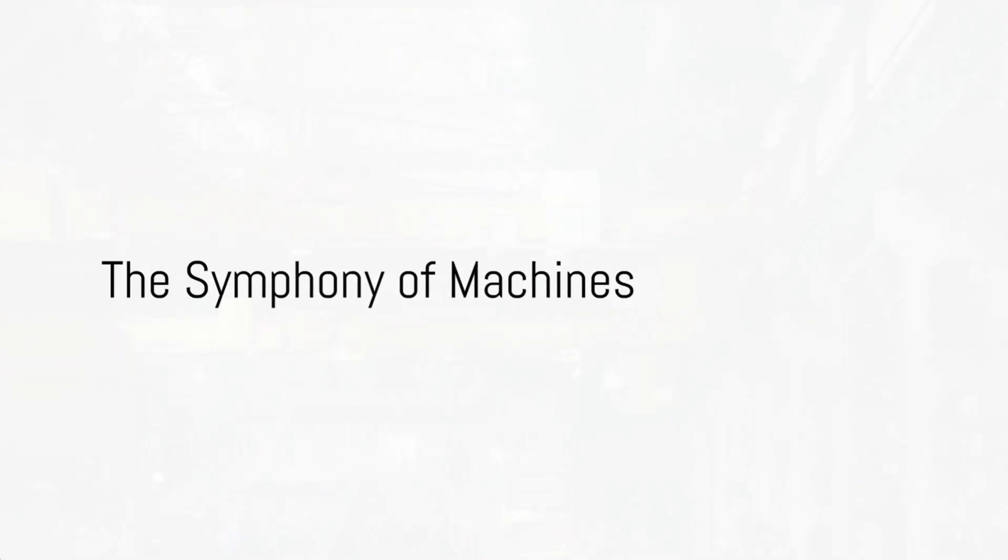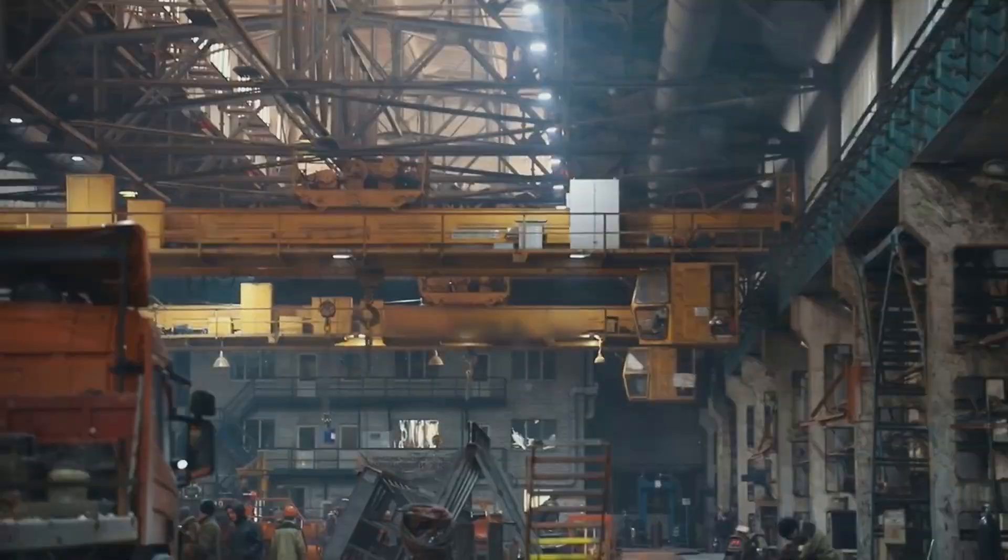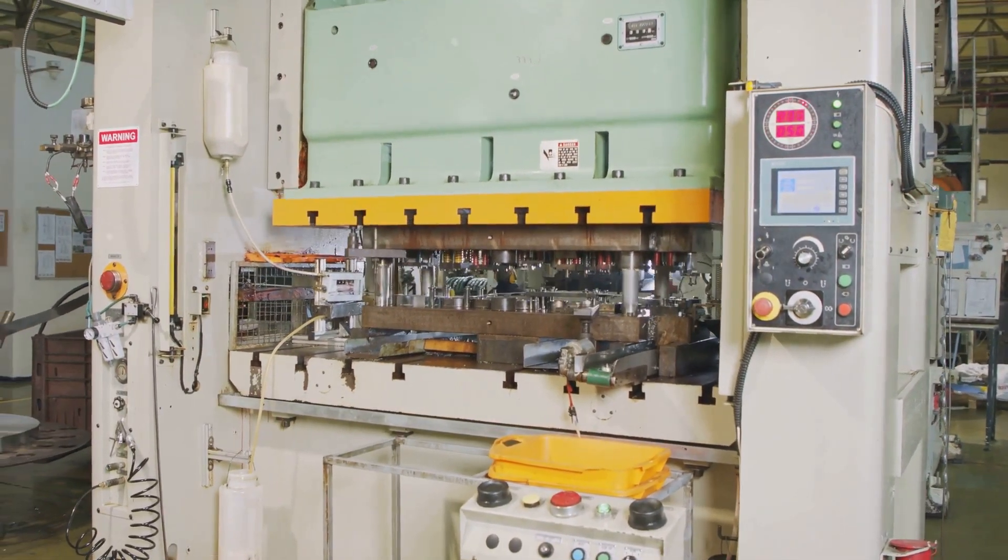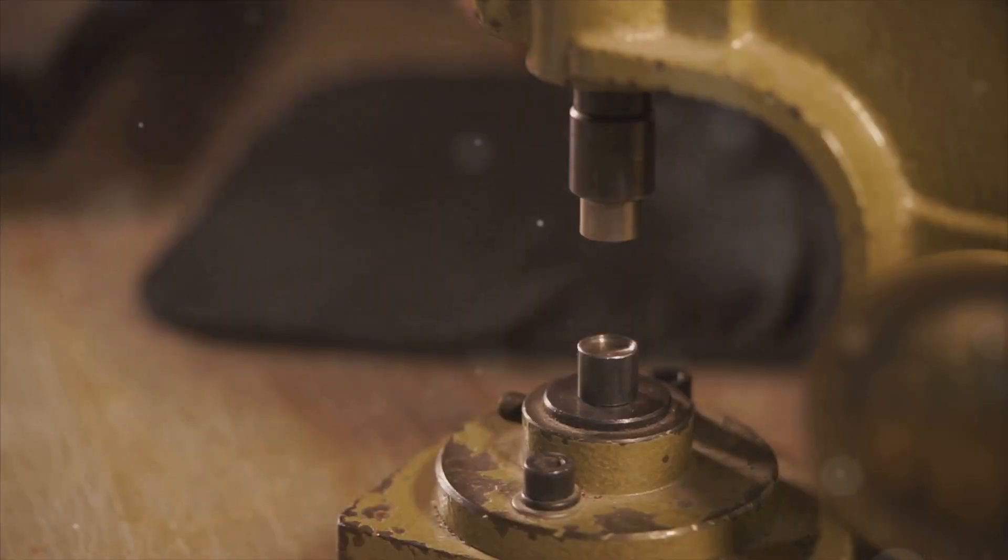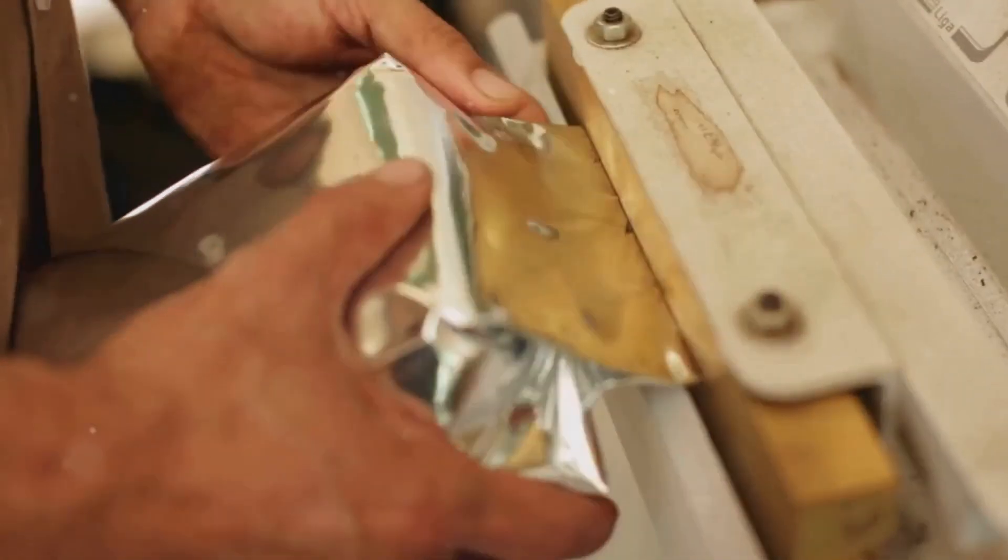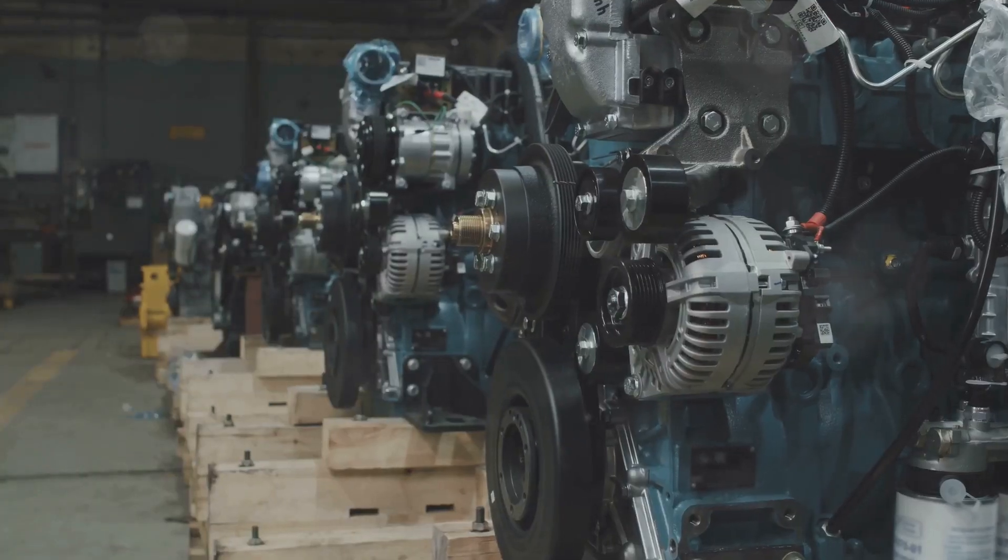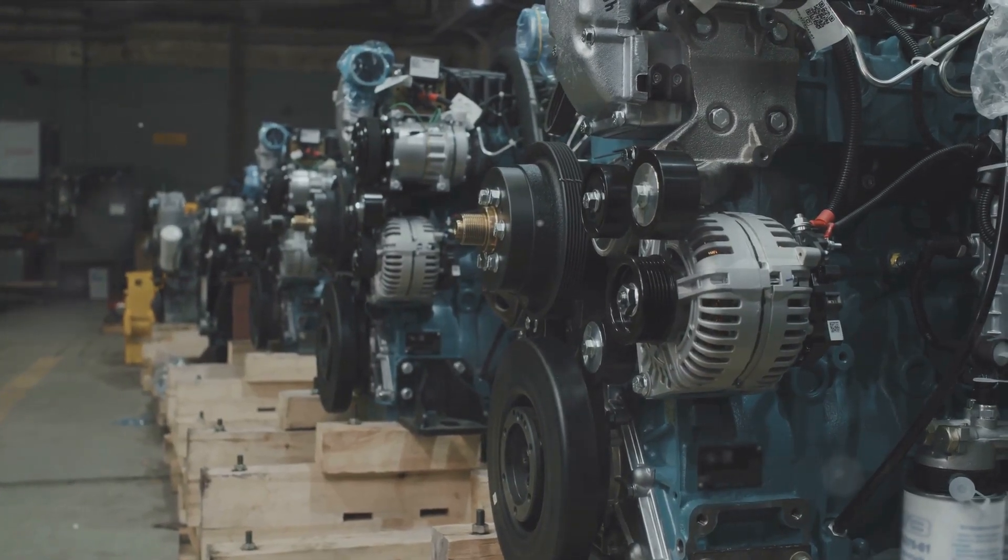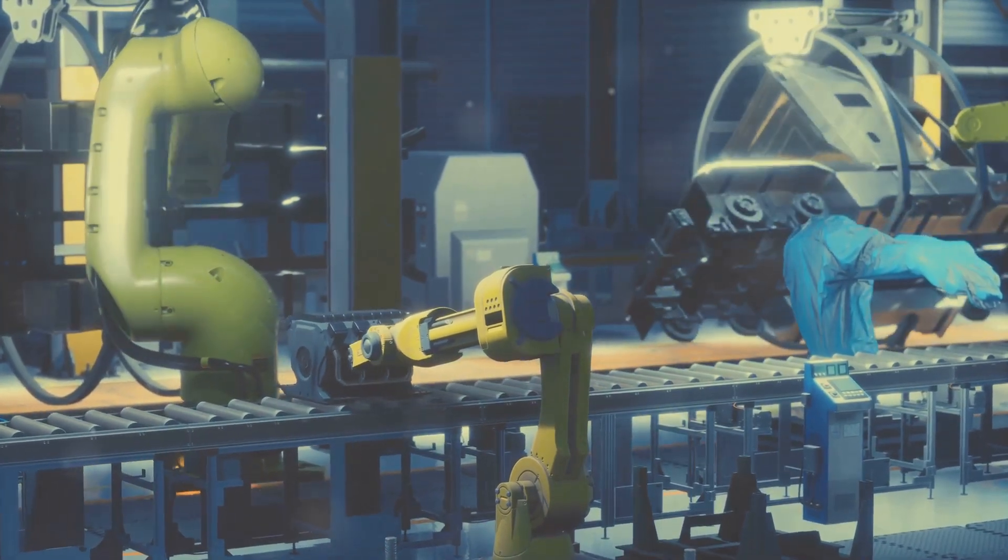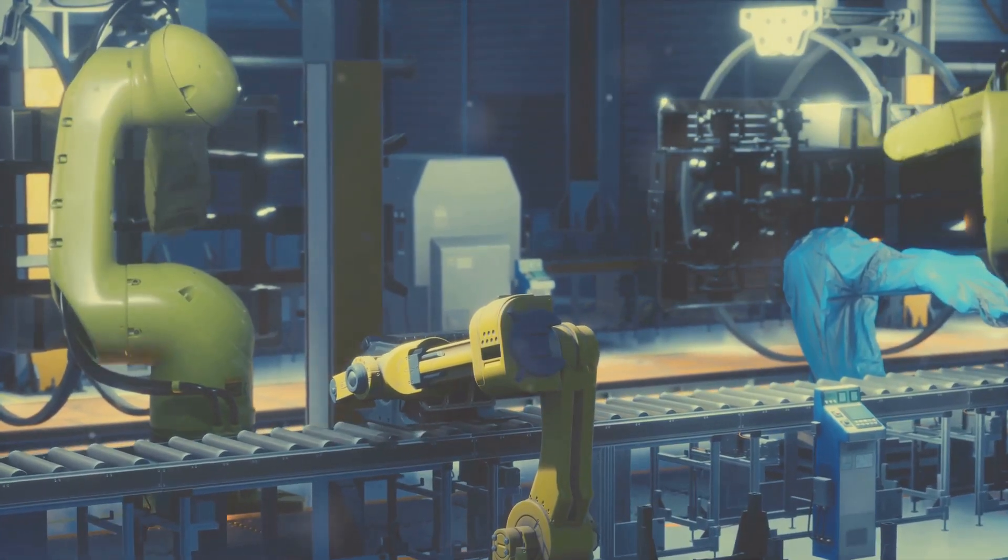And there you have it, the intricate dance of machines that takes place in a machinery plant every day. This fascinating ballet involves the power press machine, shaping materials with exceptional precision, then enters the knurling machine, adding texture and detail with each deliberate turn. Finally, the wadding machine ensures an airtight seal, the final note in our machinery symphony. From shaping materials with the power press machine, adding texture with the knurling machine, to ensuring airtight seals with the wadding machine, the machinery plant is a symphony of machines working in perfect harmony.